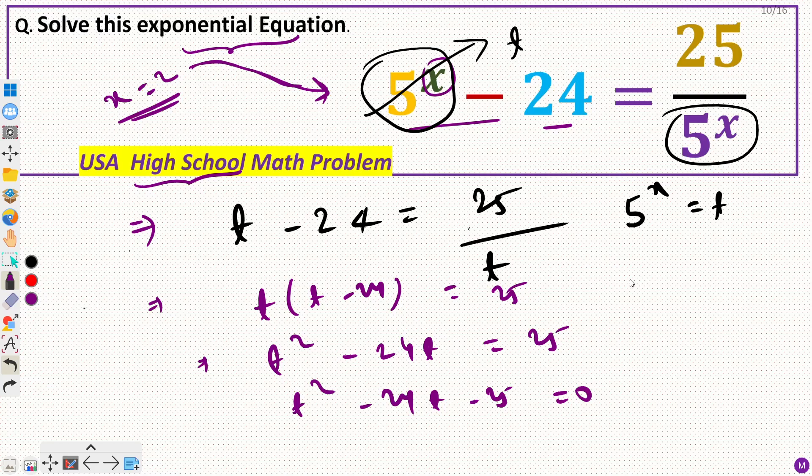So 5 raised power x, that would be 25 minus 24 equals 25 divided by 5 raised power 2, which is 25. From LHS I got 1 and from RHS I also got 1. So this means that x equals 2 satisfies my original equation. So x equals 2 is my only solution for this equation.